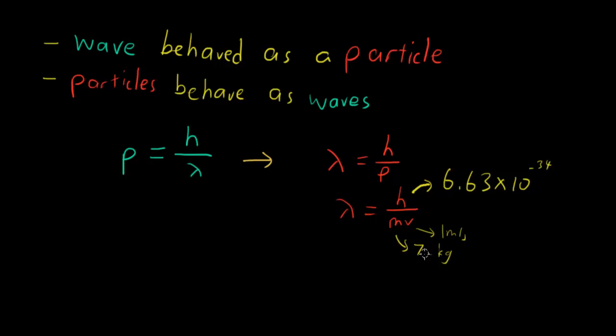But what if we had an electron instead? If we had an electron, its mass is really tiny. For example, the mass of an electron is 9.11 times 10 to the negative 31 kilograms.